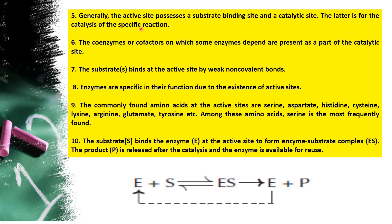The fifth point is: the active site possesses a substrate binding site and a catalytic site, where the latter is for the catalysis of the specific function. The active site not only holds the substrate binding, but also undergoes catalysis — oxidoreductase type, transferase, isomerases, ligases, lyases, hydrolases. All these reactions happen only at this site, contributing not only to substrate binding but also to catalysis.